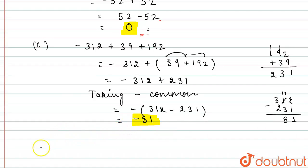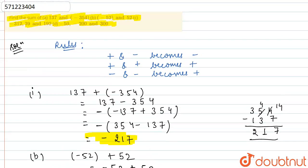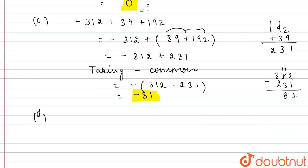Now part D: we need to find the sum of minus 50, minus 200, and 300. So I'll write this as minus 50 plus minus 200 and plus 300. Now this will remain same minus 50. Now again using the rules which I have written above, plus minus becomes minus 200 plus 300.